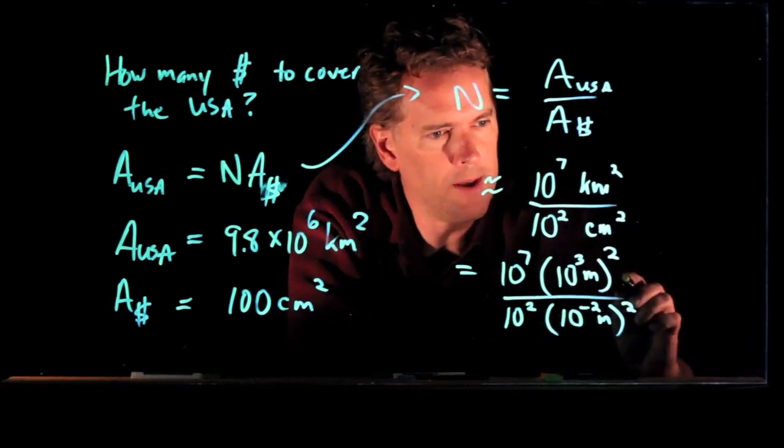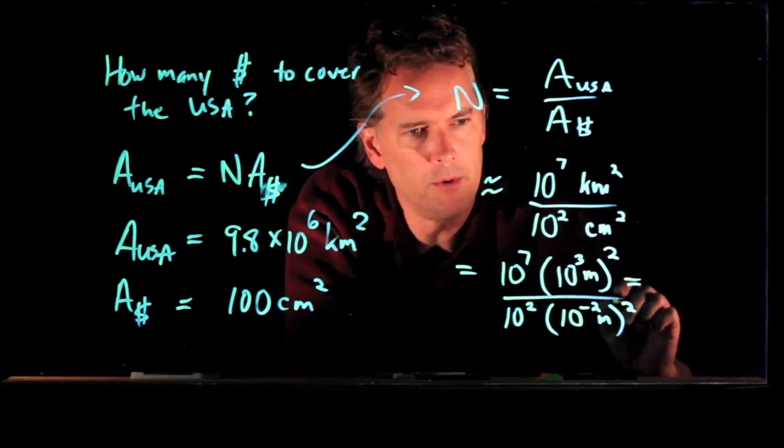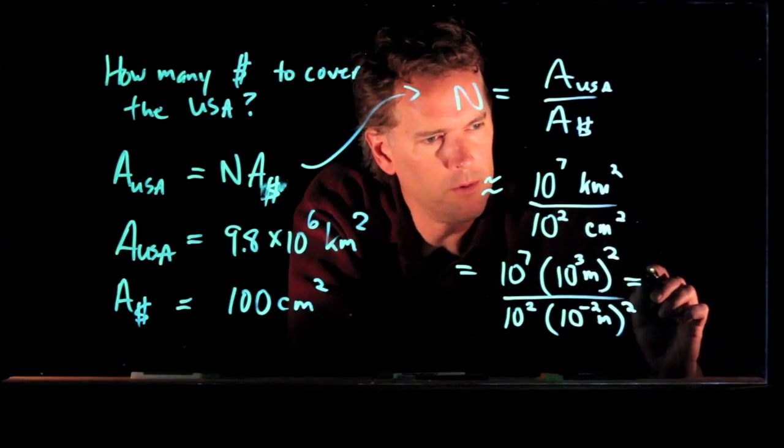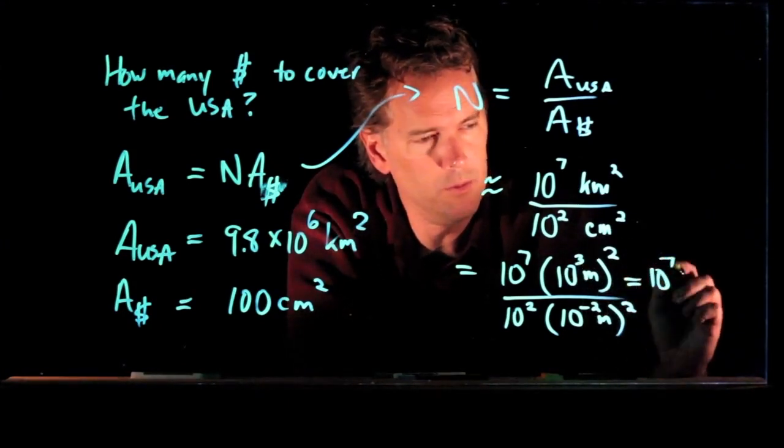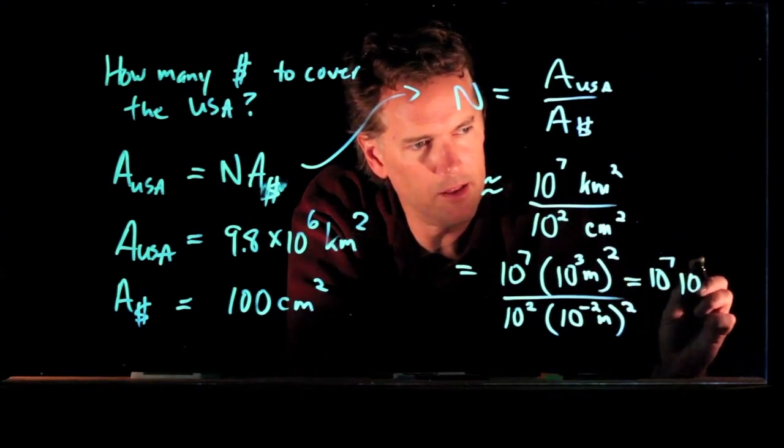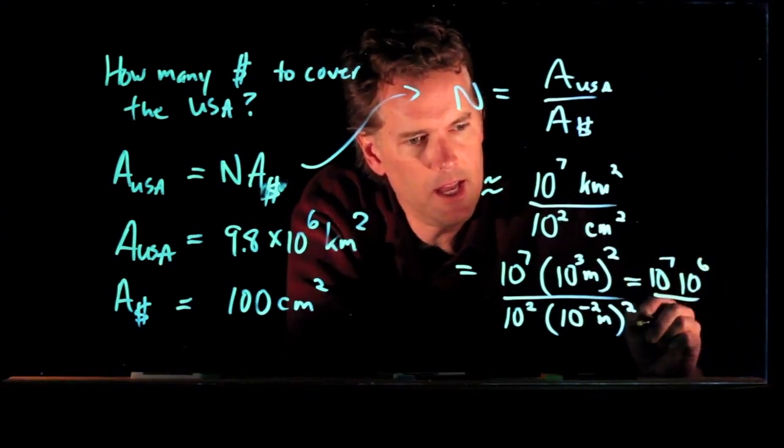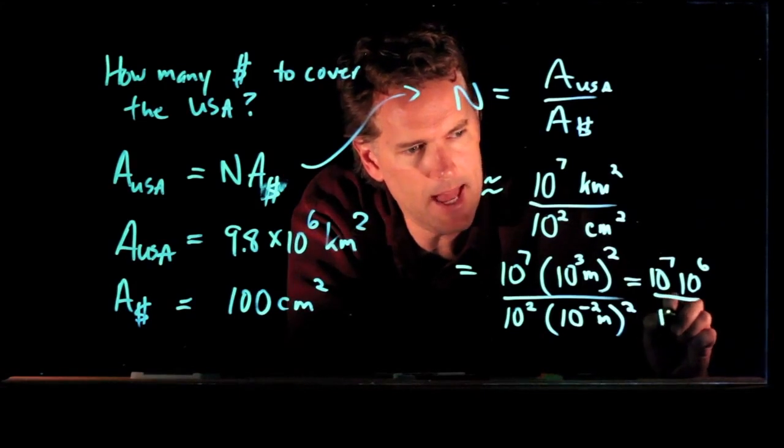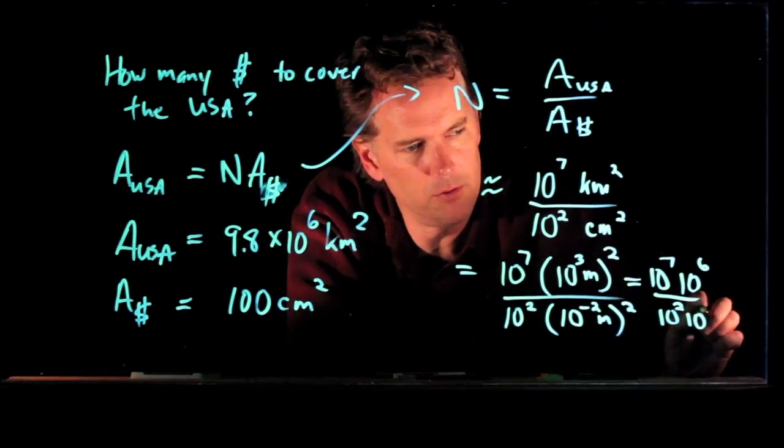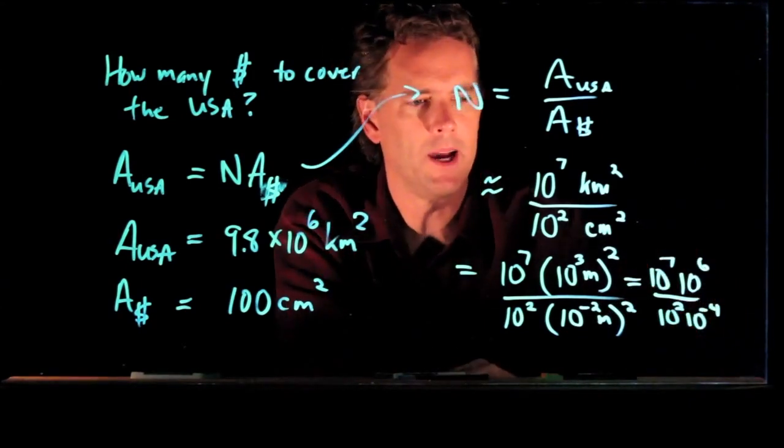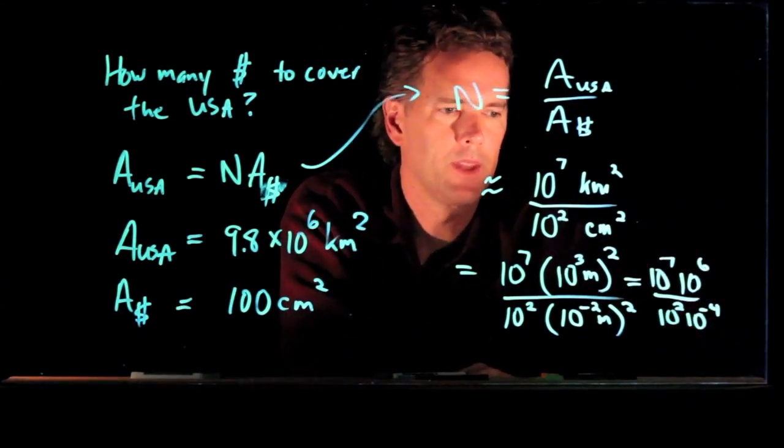And so now look what happens. We've got a bunch of numbers that we need to multiply. We've got 10 to the 7, and we've got 10 to the 3, which is squared, so that's a 10 to the 6. And down in the bottom, we have a 10 to the 2, but then we have a 10 to the minus 2 squared, which becomes a 10 to the minus 4, okay?